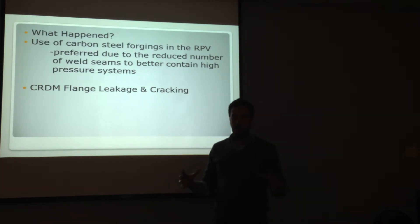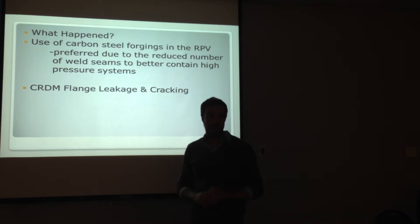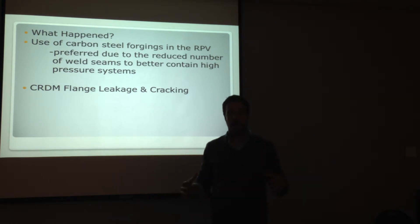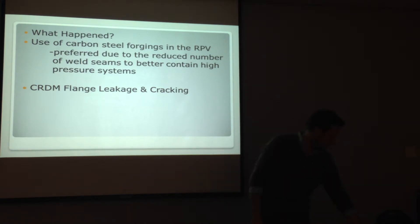Basically, the RPV reactor pressure vessel head is made of carbon steel. This is used because it's considered a forged material and has minimal welds and is great for pressure containment. Obviously, a huge plus for a reactor containing the high pressure inside. The problem with carbon steel is that while it's great for containing high pressure, it is subject to corrosion. And on the next slide, I'll show you how they battled that.